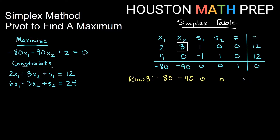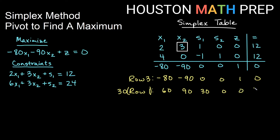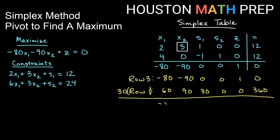Row three is: negative 80, negative 90, 0, 0, 1, 0. We're going to use row one — the pivot row — to change that. In order to reduce negative 90 to zero, I need to add a positive 90 to it. To get a positive 90 from the pivot, I need to multiply by 30 to turn the three into a 90. So I'm going to use 30 times row one to reduce row three. Multiplying everything in row one by 30: 30 times 2 gives 60, 30 times 3 gives 90, 30 times S1 gives 30, 30 times the zeros leaves zeros, and 30 times 12 gives 360. Adding these together, we get negative 90 plus 90, which gives us zero in the spot we want.